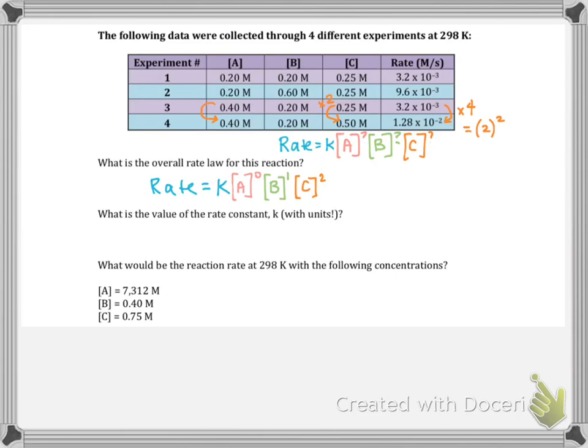So there we have our rate law. And you might instead see it kind of simplified as K, B, C squared.